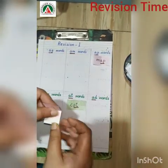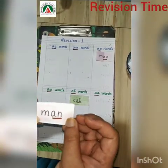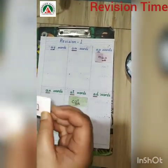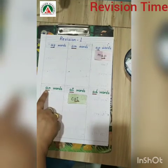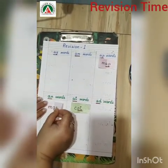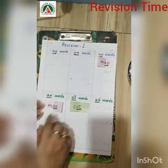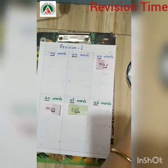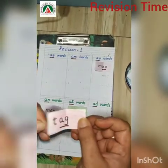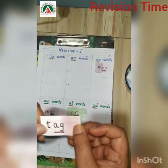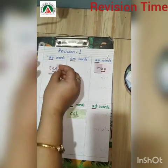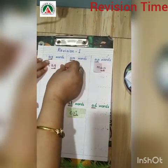Now next word is man. So again we have to search — where is 'an'? Here it is, 'an' words. So we will paste this 'man' here. Now next word is tag. So where is 'ag' words? Here — so we have to paste it here.